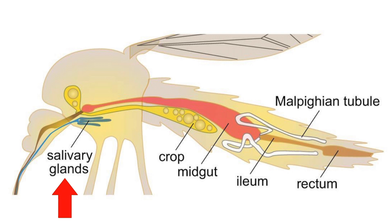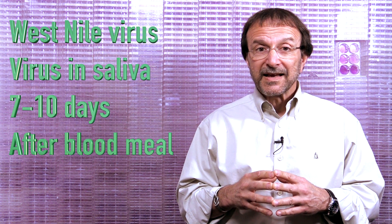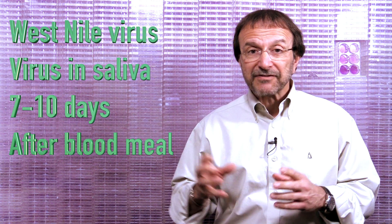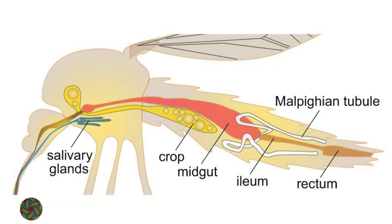For West Nile virus, it takes seven to ten days for virus to appear in mosquito saliva after the mosquito has taken a blood meal. When the female mosquito is ready to make a new batch of eggs, it seeks another blood meal. This time, when the mosquito is probing and depositing saliva in the skin, along with the saliva comes a virus from the salivary gland, and that is how mosquitoes transmit viruses from one host to another.